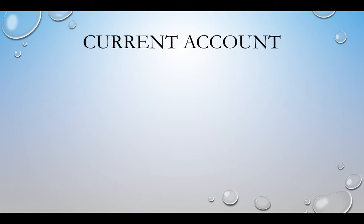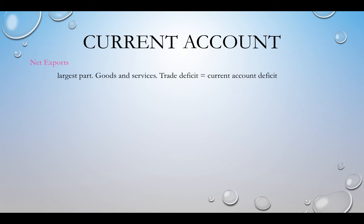The current account has three parts. The first part is net exports — goods and services — the largest part of the current account. If we have a trade deficit, bringing in more than we're sending out, we would also have a current account deficit. A trade deficit is the same thing as a current account deficit.